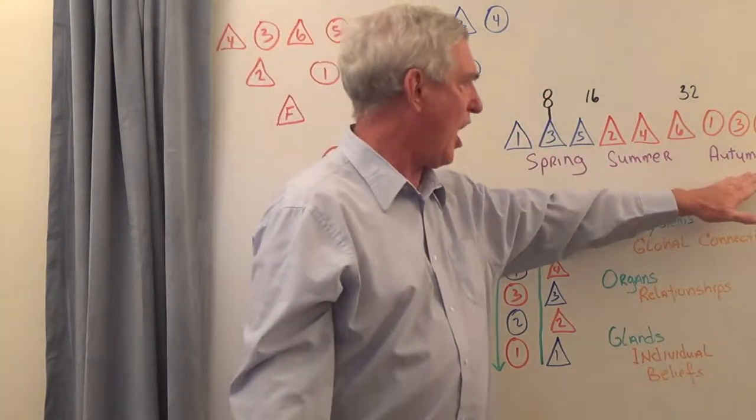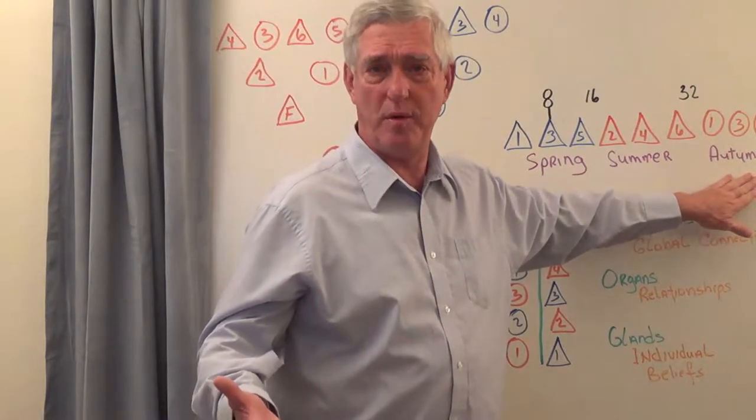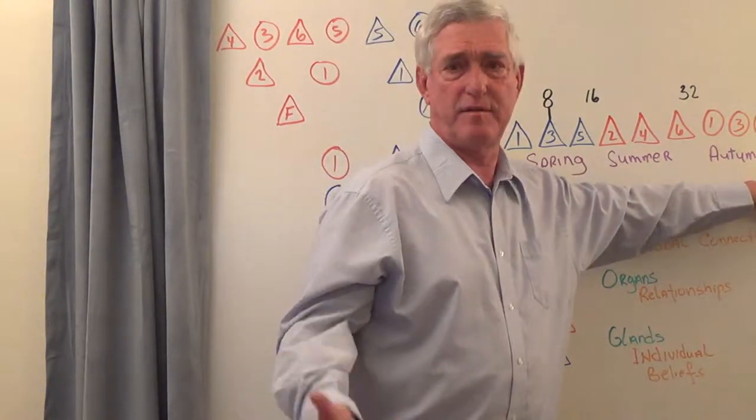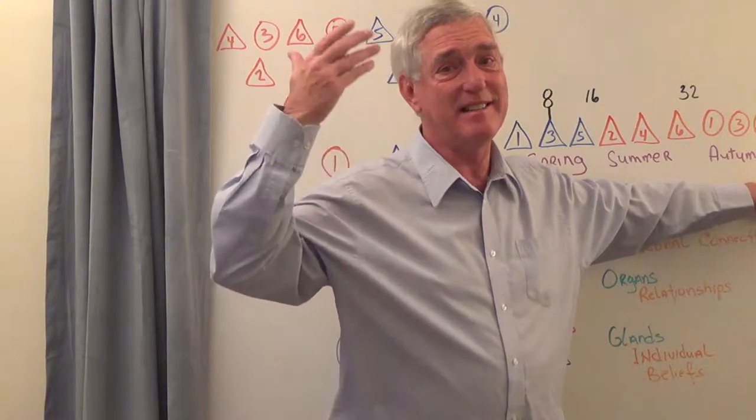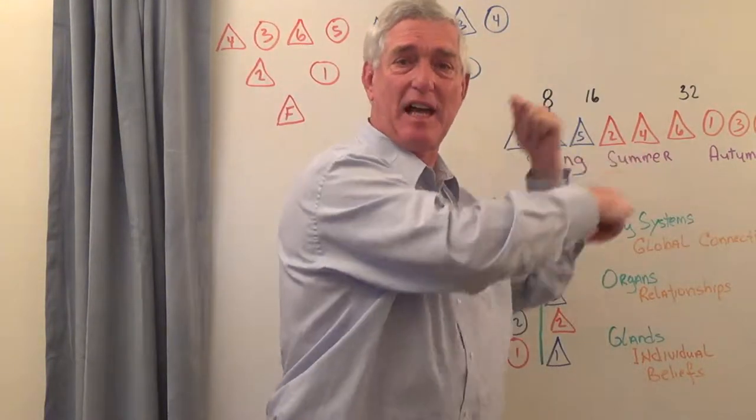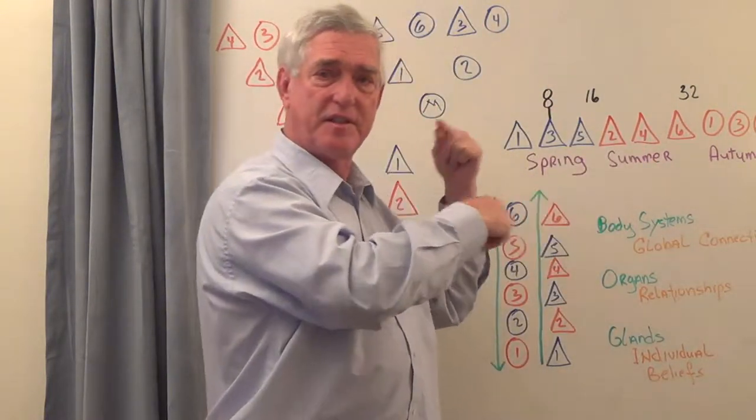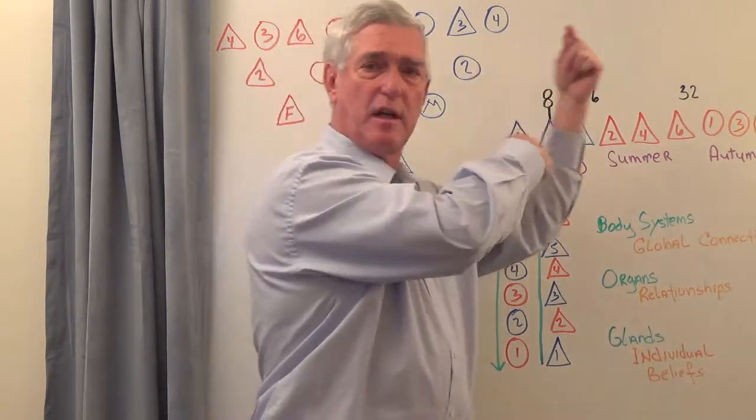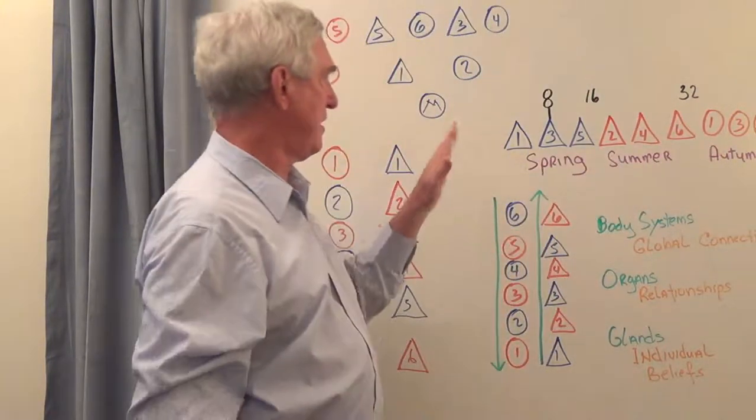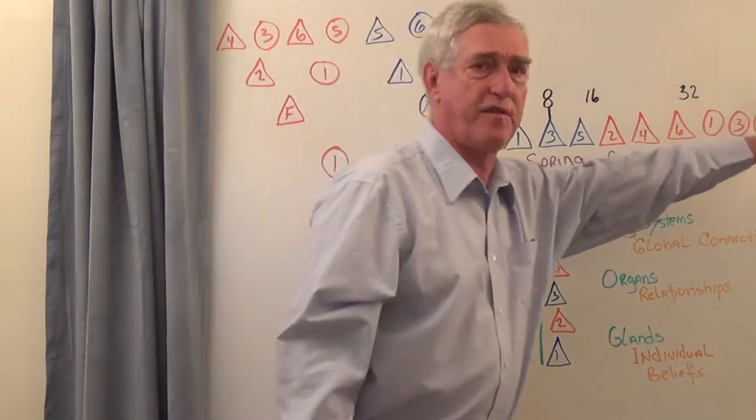We also have the autumn of life, the afternoon. We have the winter of the day, which is the night time. This is a cycle of 24 hours. This is cycles of seasons. This is a cycle of one pattern of life from zero to 64.